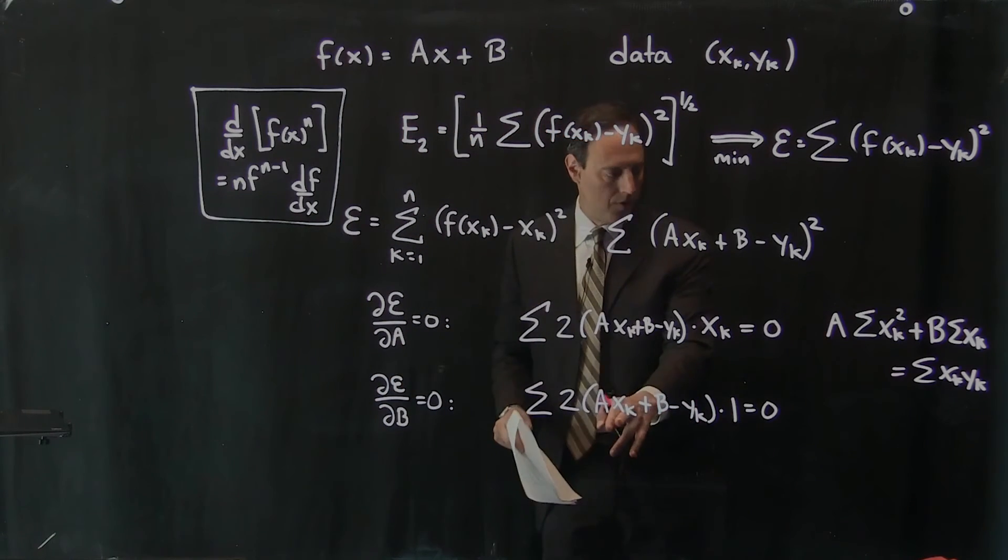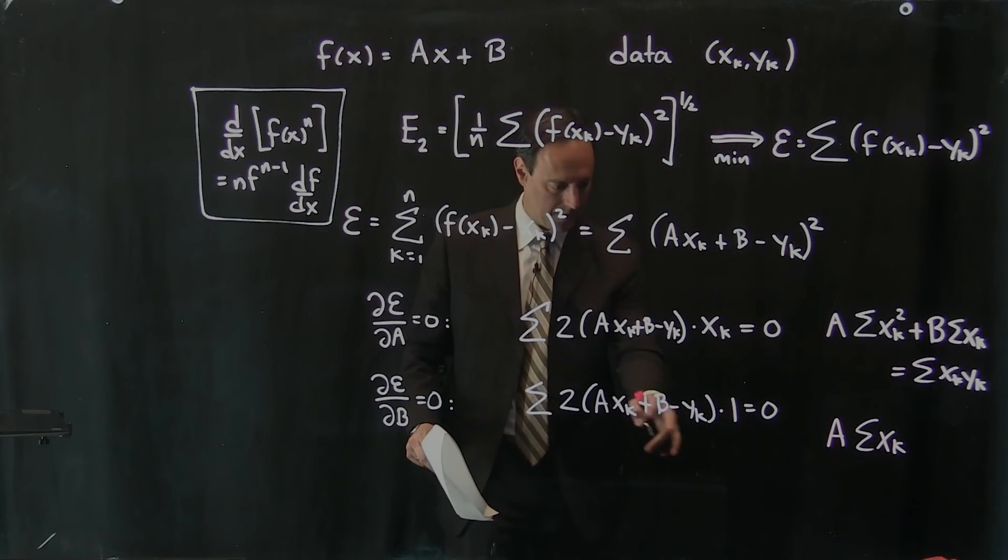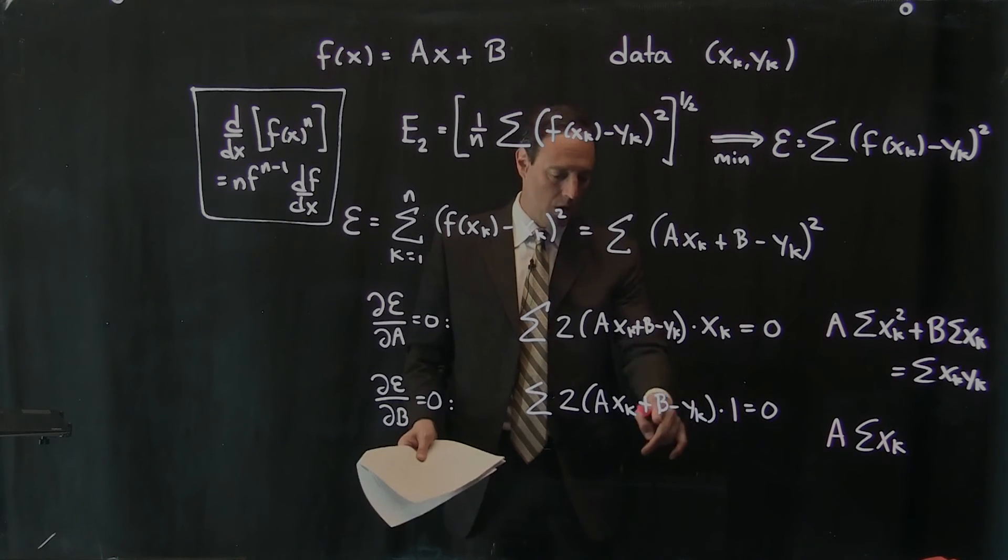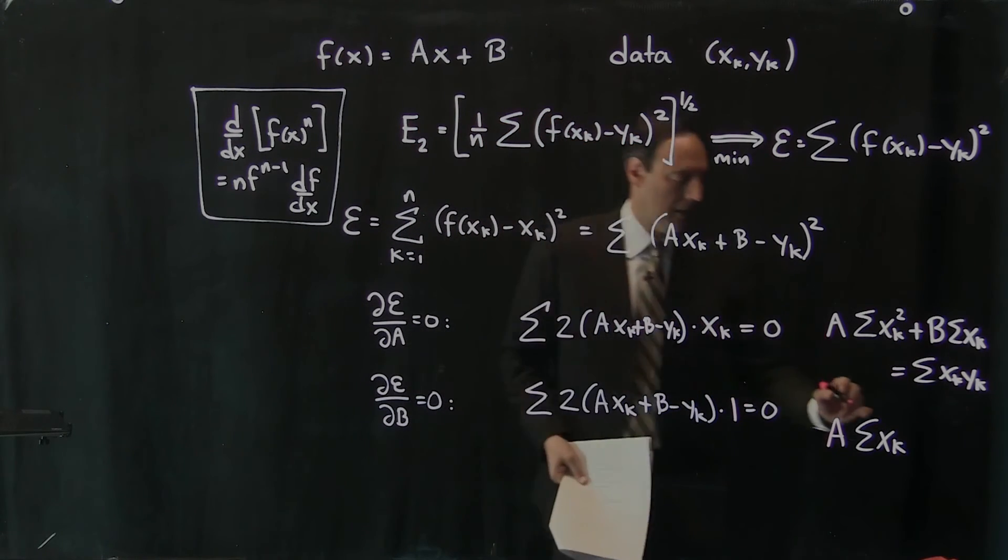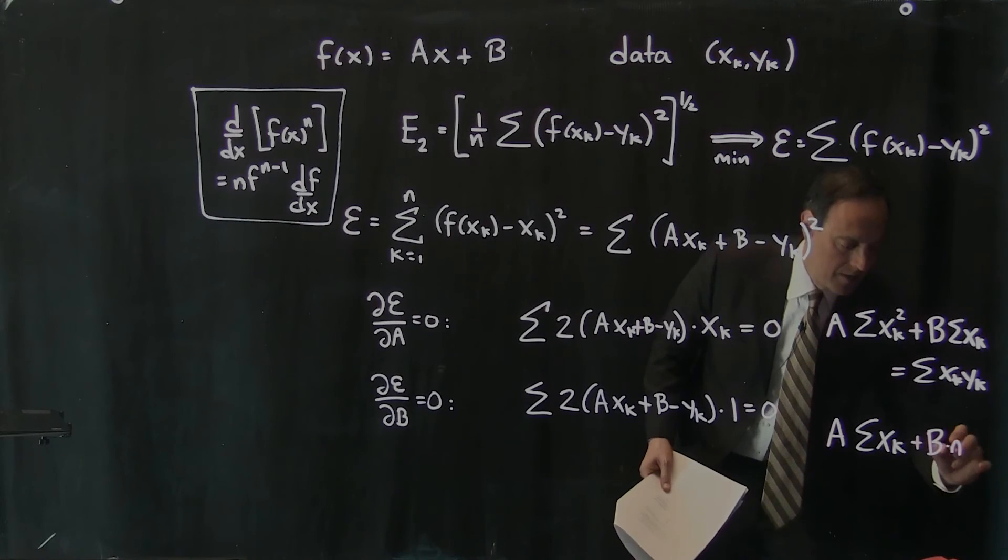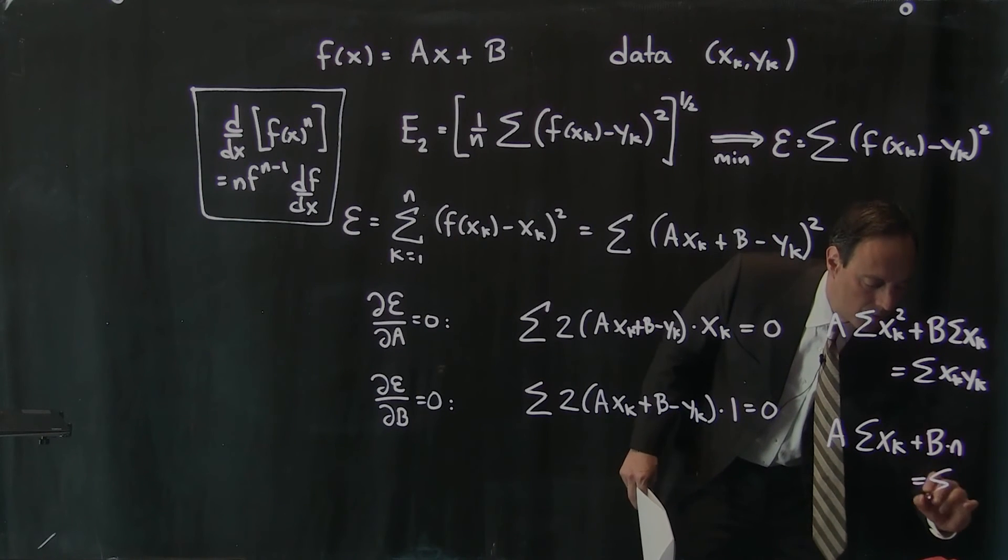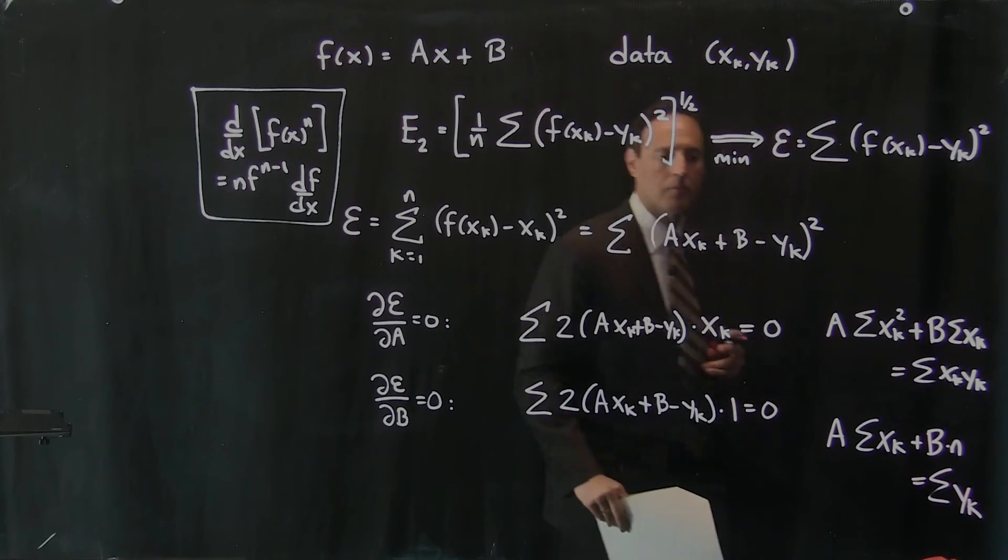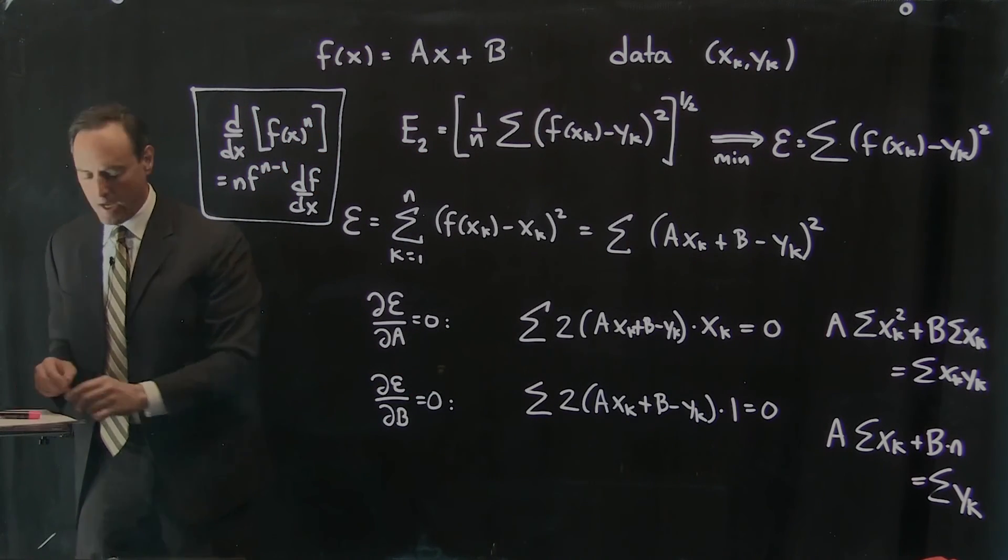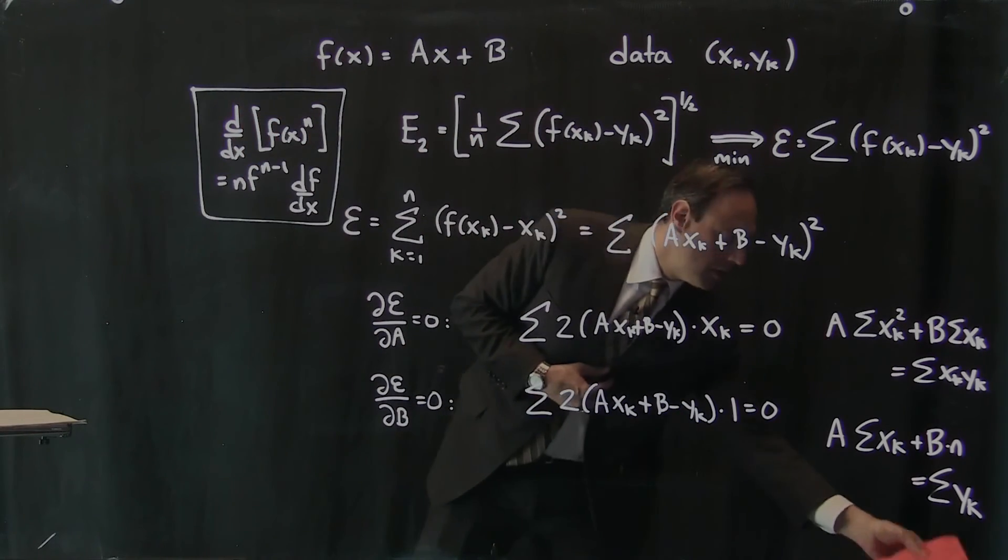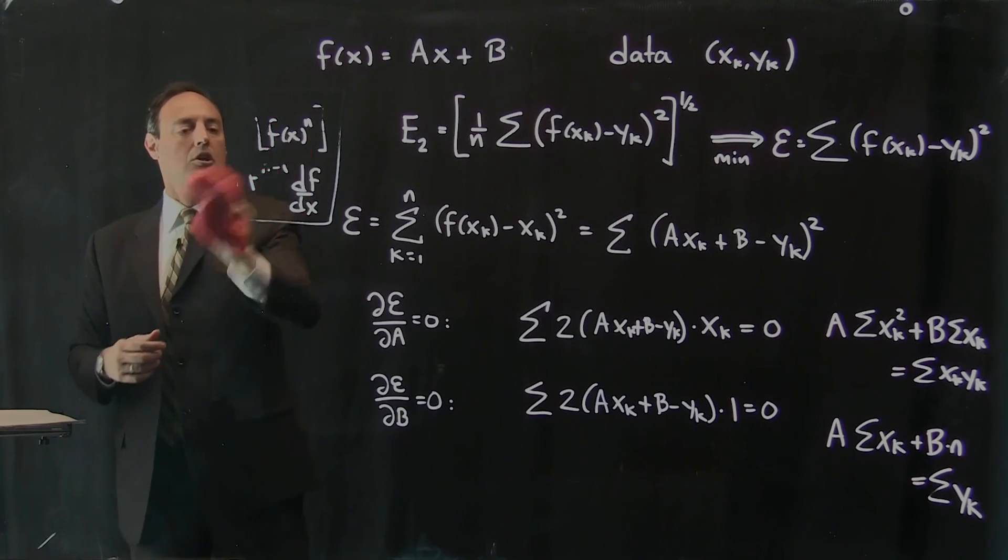For the second one, I have A times sum of X_k. That's this guy here. Then I have B times 1, and that's the sum of them. So if I add up B n times, I get n times B. So I get plus B times n, and then I just have Y_k here which I can move to the other side, which is equal to Y_k. So those are the formulas I get, and that's going to give me my final formula for how to solve for A and B, because now I have two equations, two unknowns.